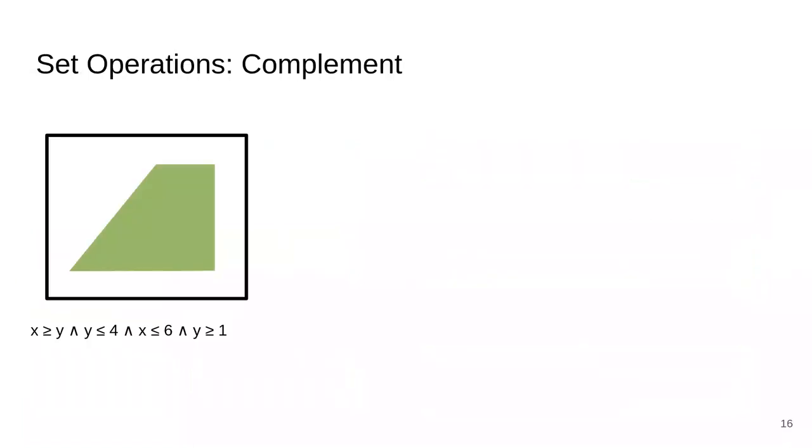For example, we have a set satisfying the constraints x ≥ y, y ≤ 4, x ≤ 6, and y ≥ 1. The output of the complement operation will have one integer polyhedron for each of these constraints, corresponding to the set of points where this is the first constraint being violated. So in this case, the output would have the first integer polyhedron being the set of points where x < y,